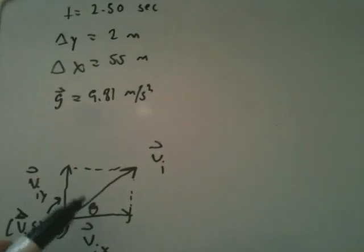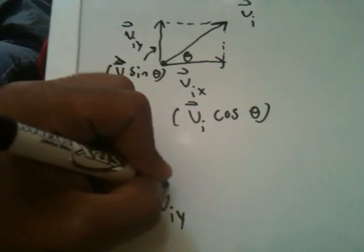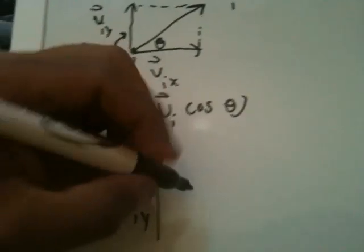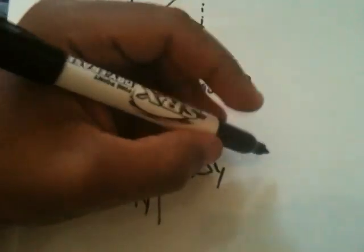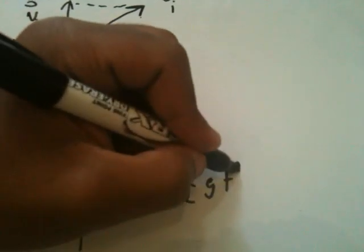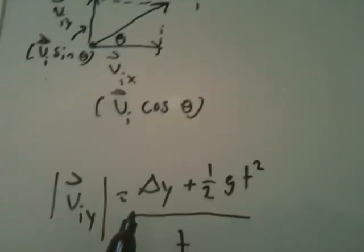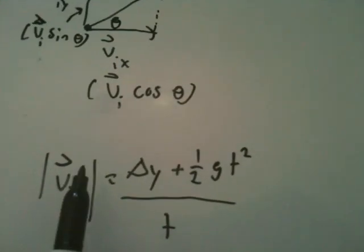We're trying to find theta, and we should be able to find the horizontal and vertical components of this initial velocity in order to find it. When I first solved this problem, I started off with trying to find the vertical velocity, v sub i y. The formula for that would be: delta y, the vertical change, plus one half times the acceleration due to gravity times time squared, all over time. We have delta y, g, and t, so we can use all this to solve for v sub i y.